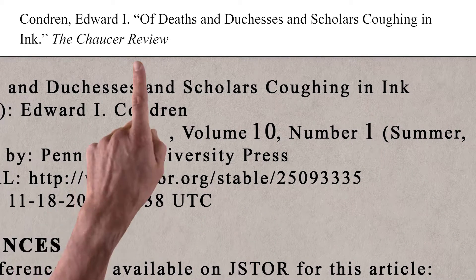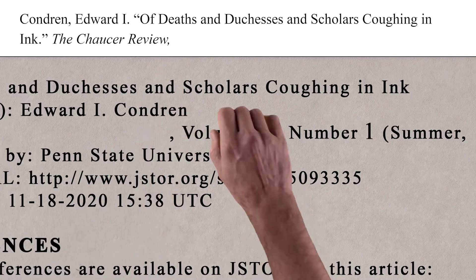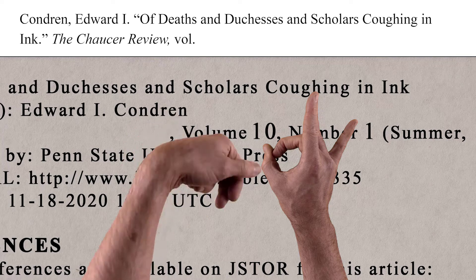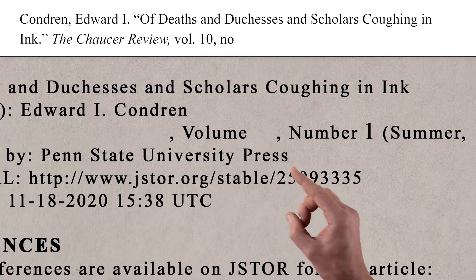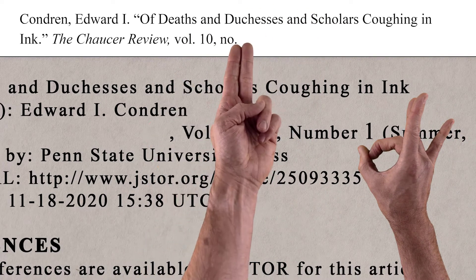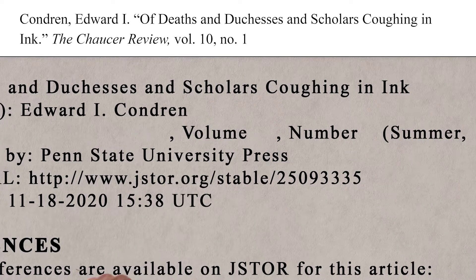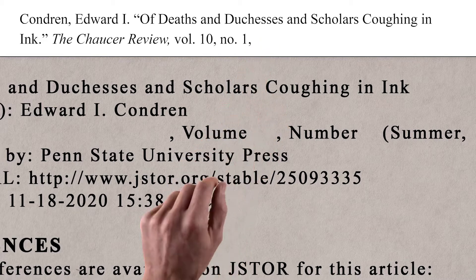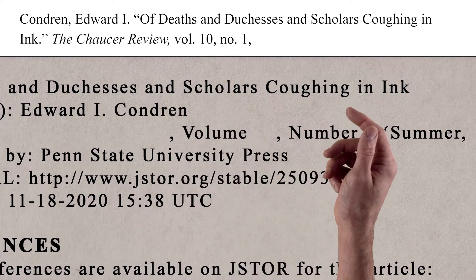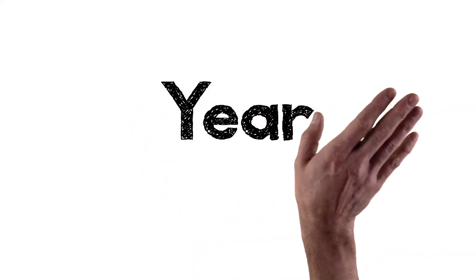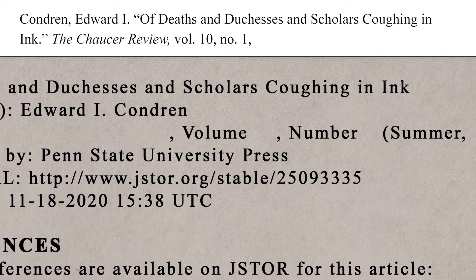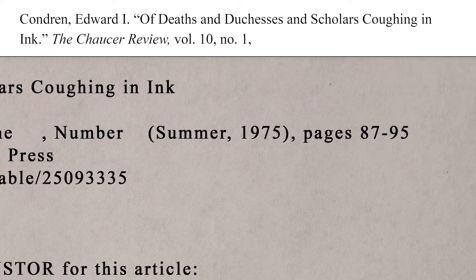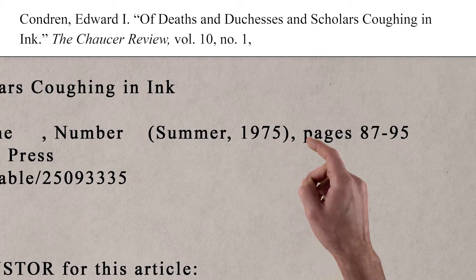We indicate this by putting a comma after the journal title, a space, then VOL — that's short for volume — a period, a space, the number 10, a comma, a space, NO — that's short for number — a period, a space, and the number 1. Next, we put a comma after the issue number, a space, and drop in the date. Dates can be a little funky in MLA. Your article might give you just a year, a month and a year, a season and a year, or something else along those lines. The rule is: include as much information about the publication date as the source gives you. In this case, the issue was published in Summer 1975, so we include that.